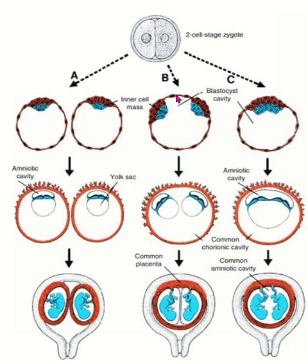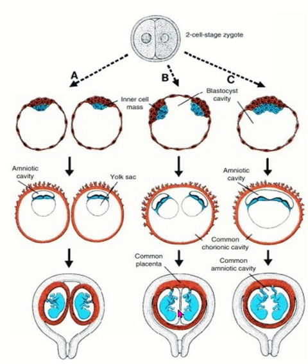If the separation process is a little bit later, then a single blastocyst is formed but there are two embryoblasts. A single chorionic cavity is developed, but two bilaminar germ discs are formed, with two separate amniotic cavities and two separate yolk sac cavities. The two amniotic cavities are hugely enlarged and fuse with the single chorionic cavity. This type of pregnancy is known as diamniotic-monochorionic twin pregnancy.